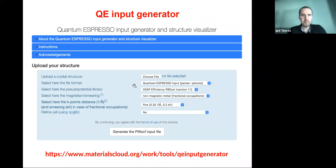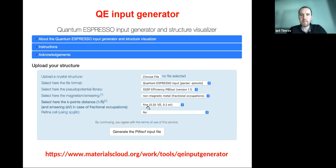You also need to tell the tool which pseudopotentials you want and whether the system is metallic or non-metallic. For k-points, there are options depending on spacing between k-points in the Brillouin zone — you can choose fine spacing of 0.21 inverse Angstrom or a denser sampling. The more k-points you have, the more accurate your calculation.